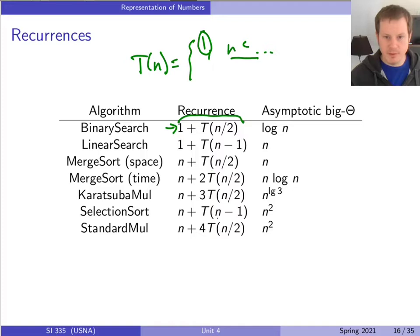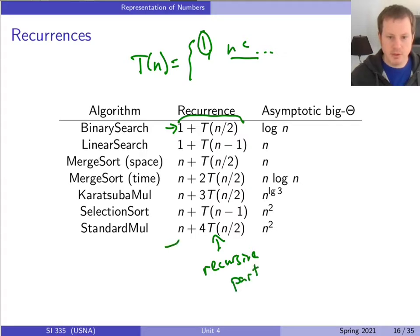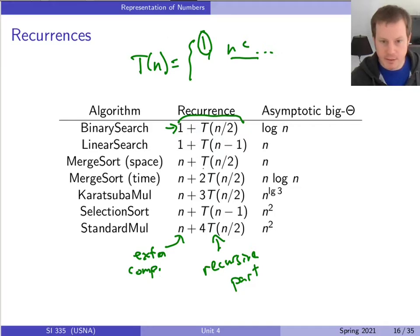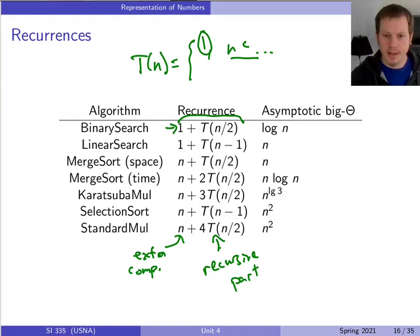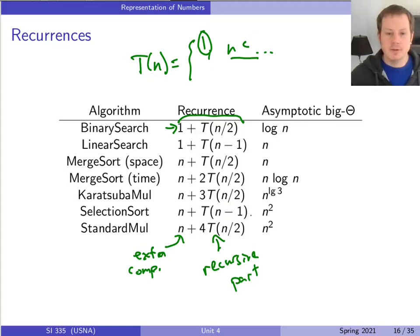We've seen all these different things that have some slightly different form, but notice what's in common. We have a recursive part and some extra computation. The recursive part tells us how many recursive calls we have — two, three, four, or one — and what the input looks like. So far everything we've seen is either N divided by two or N minus one, and we've seen all these different running times come out of it.